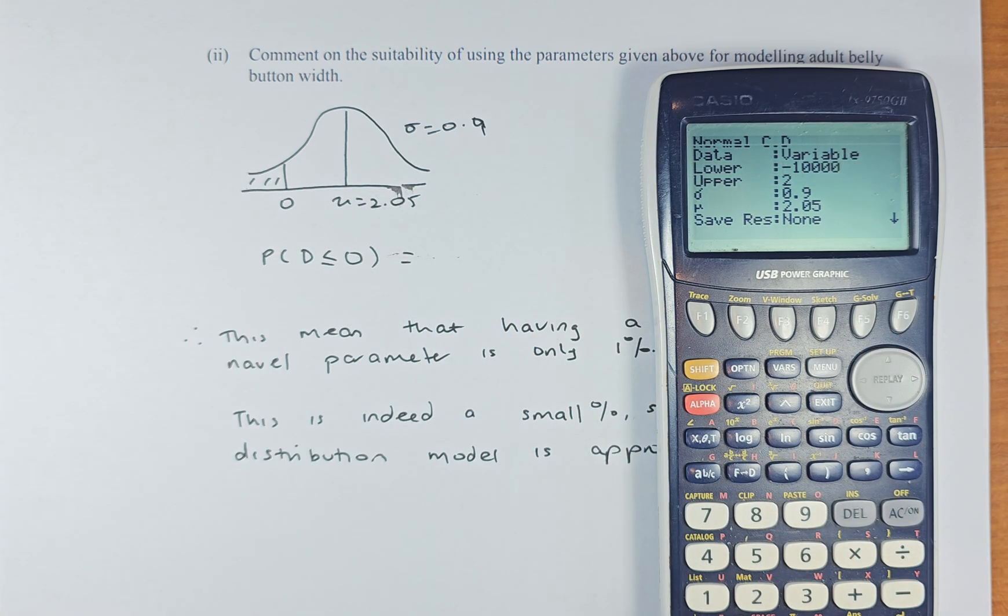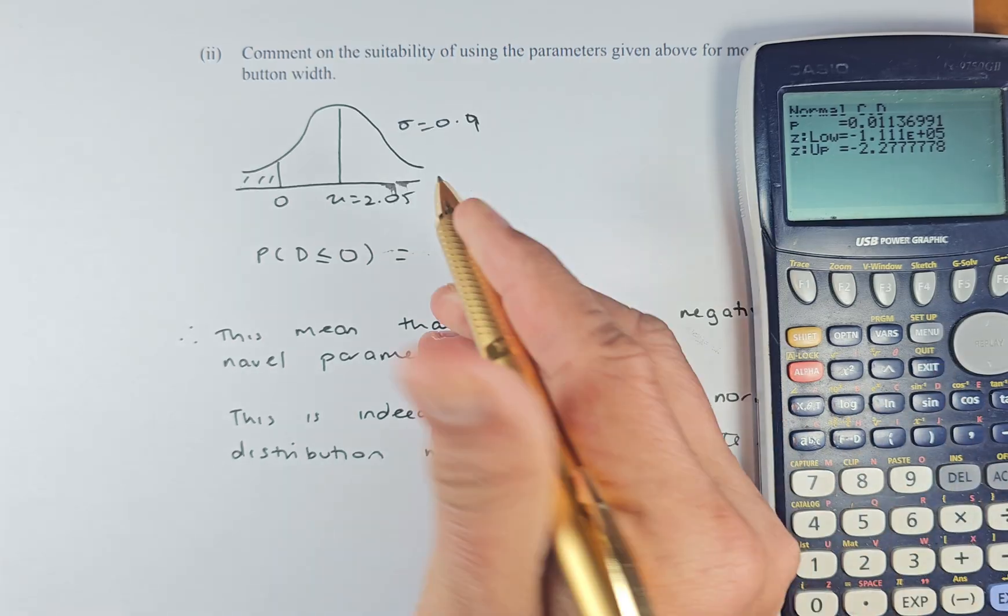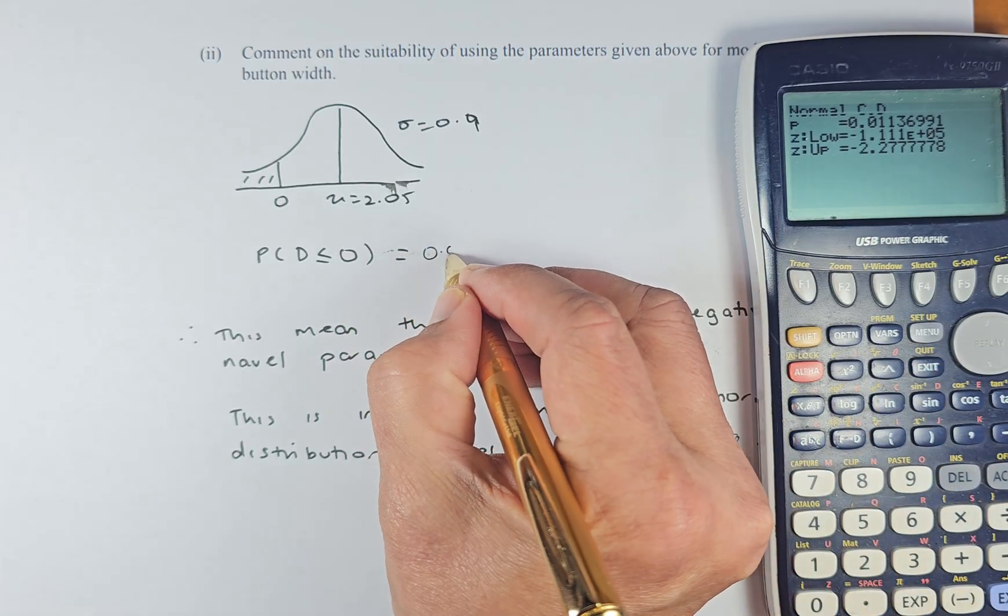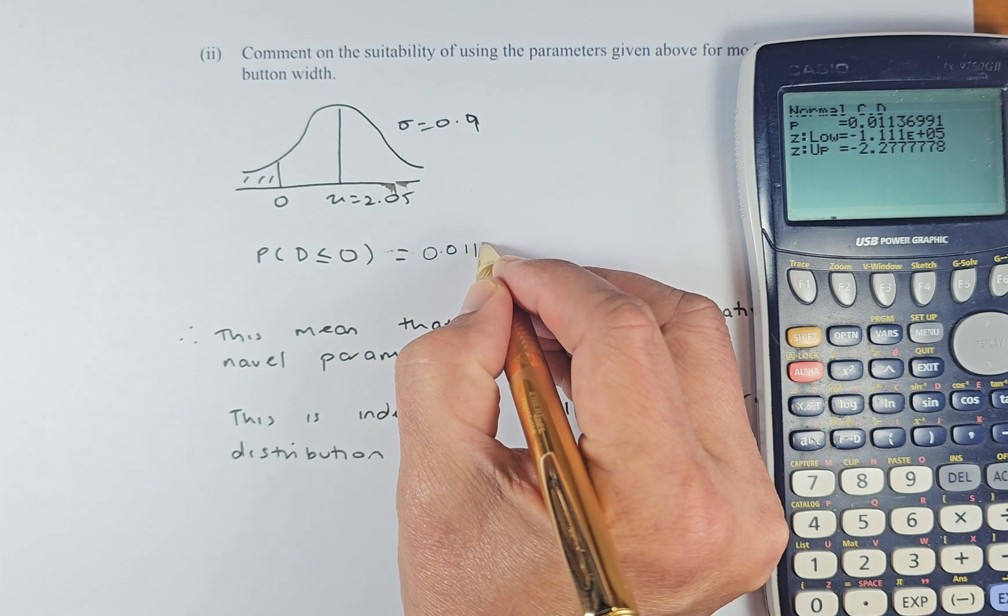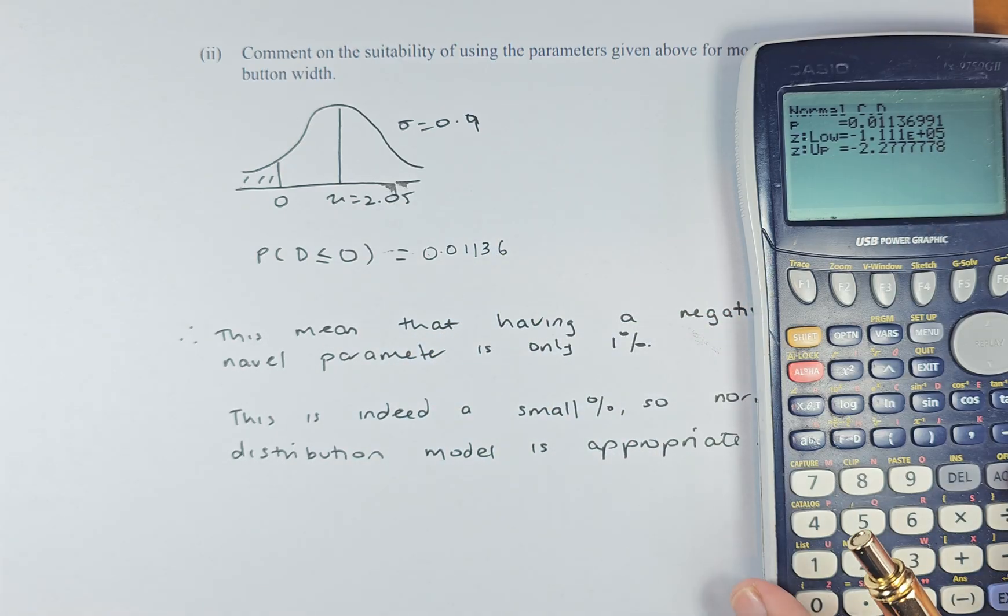Standard deviation and mean is the same. So we're just going to execute, execute. And the answer is 0.01136. That is the probability, 0.01136. We're going to round them up. And this means that for a negative, to get a number that is negative or is less than 0 is only about 1.1%. About 1%.